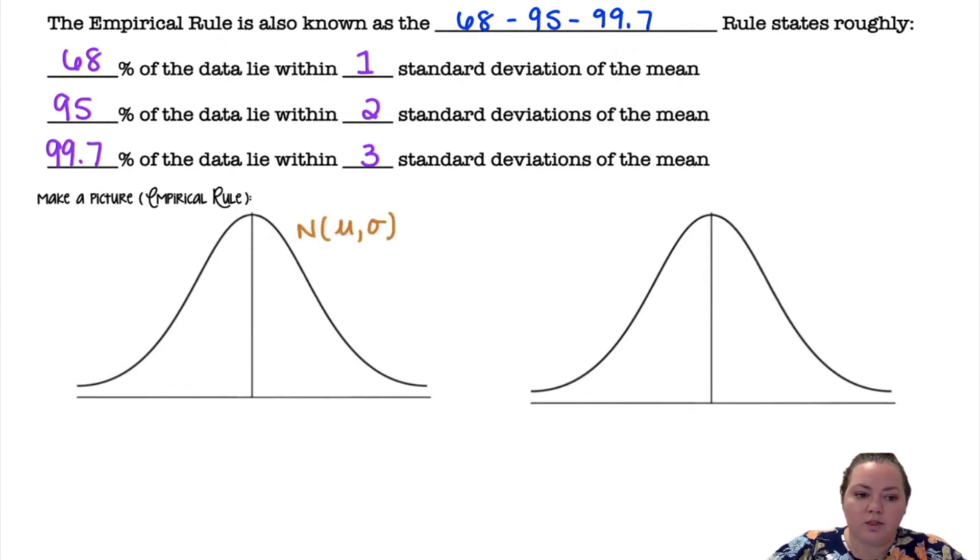All right, so we have a normal distribution and we are going to go ahead and go three standard deviations above and below the mean. All right, the mean is in the center which is mu, and then as I move to the right I'm adding one standard deviation every time. So I have mu plus one sigma, mu plus two sigma, mu plus three sigma. Sigma represents the standard deviation.